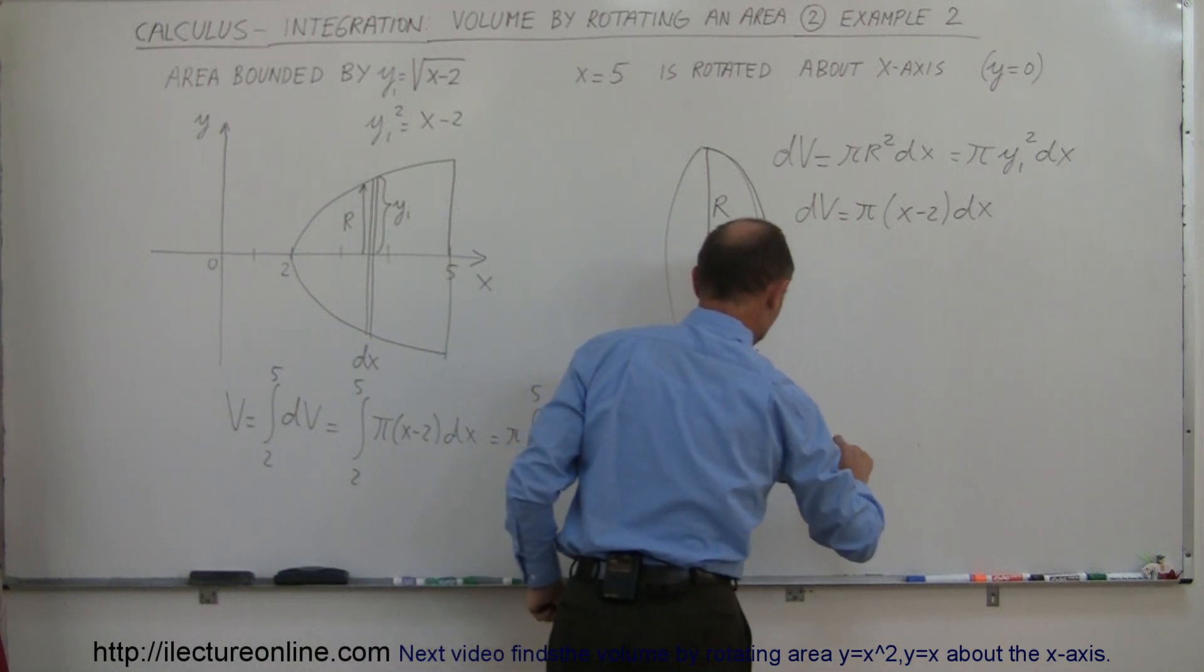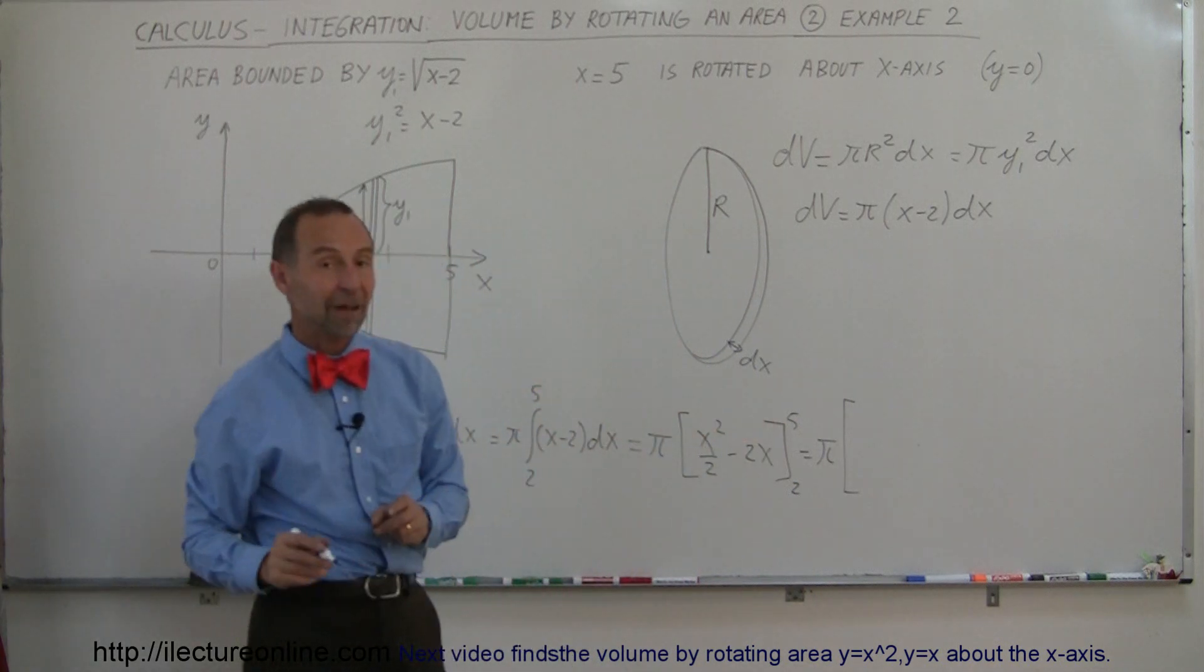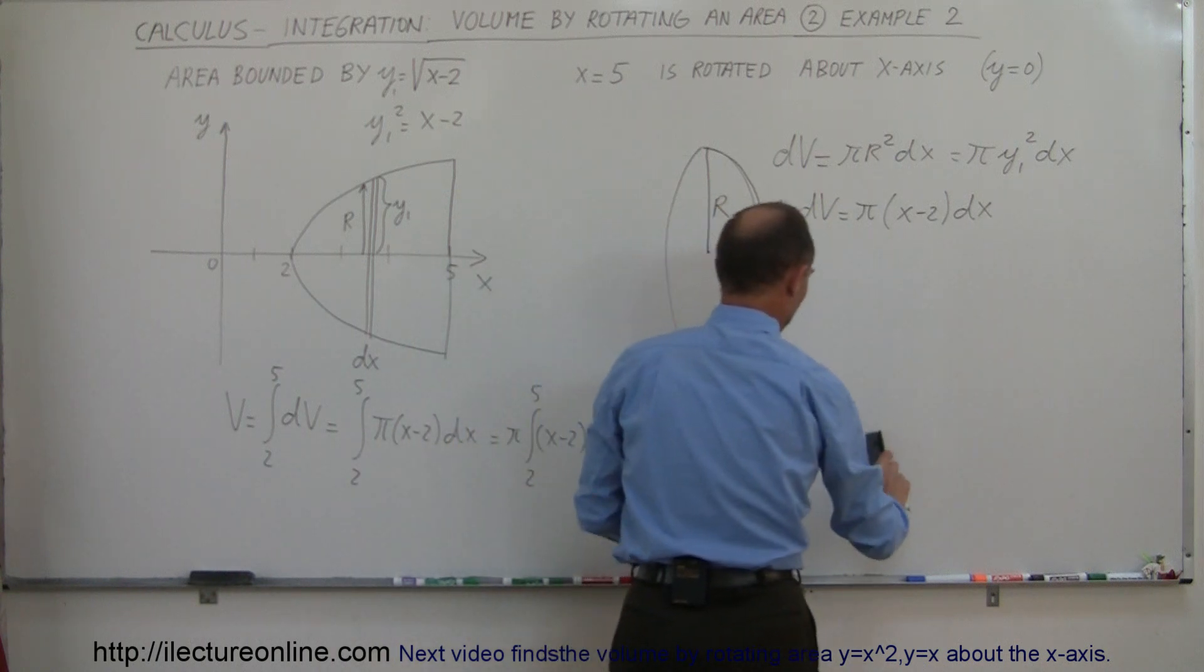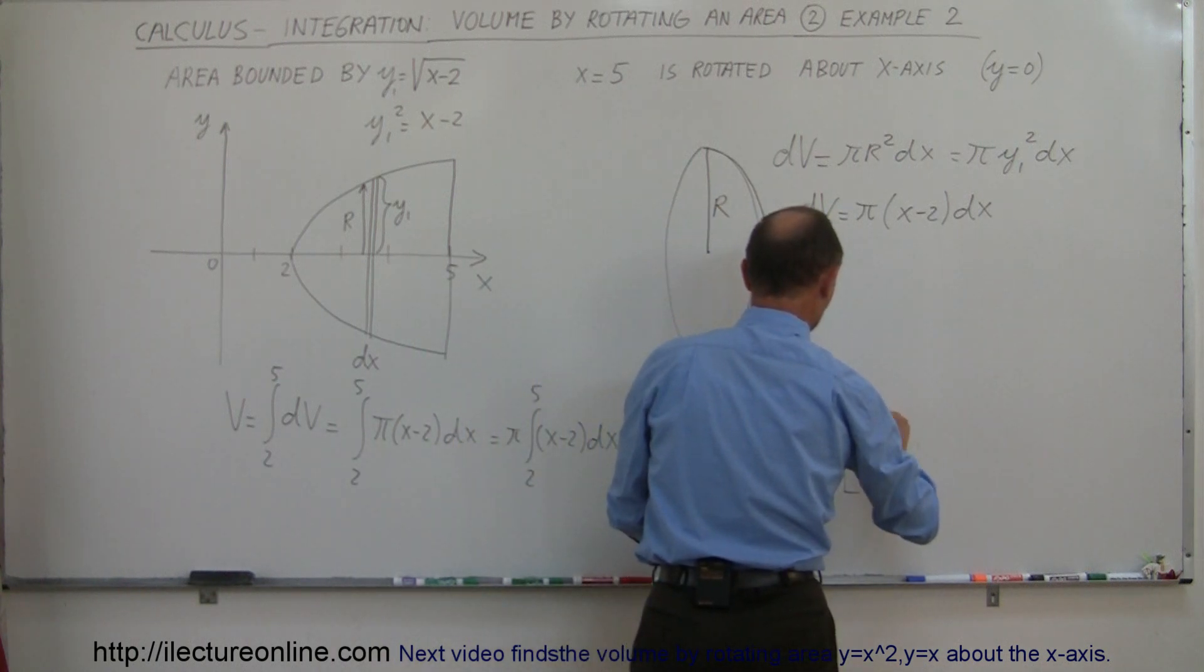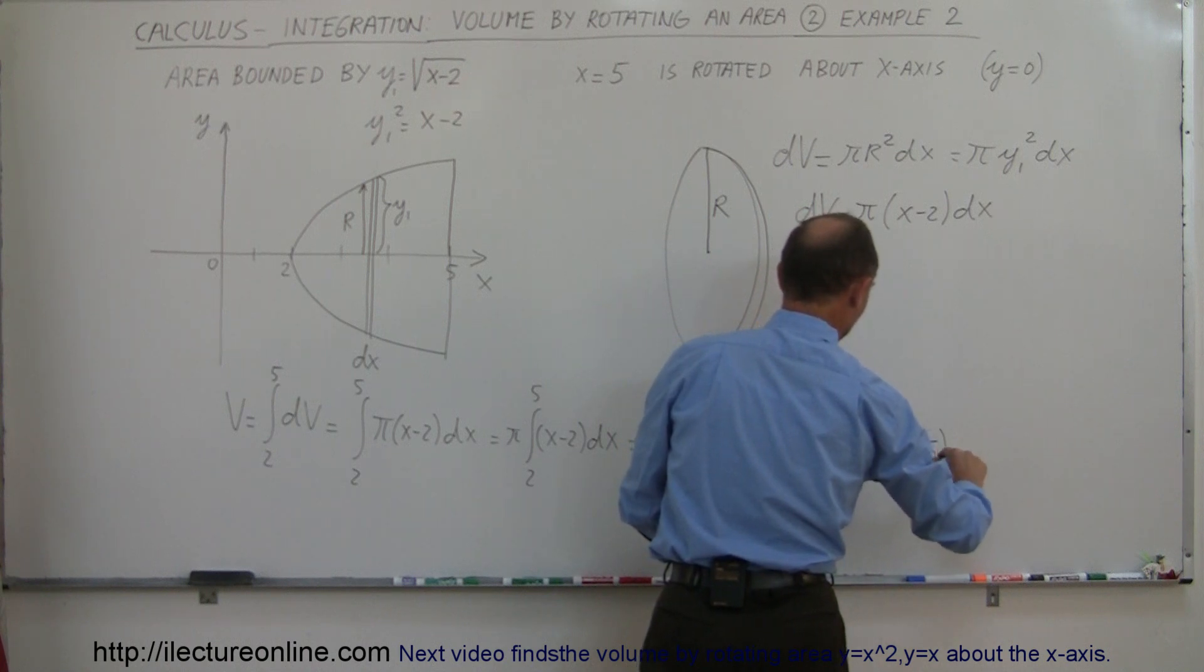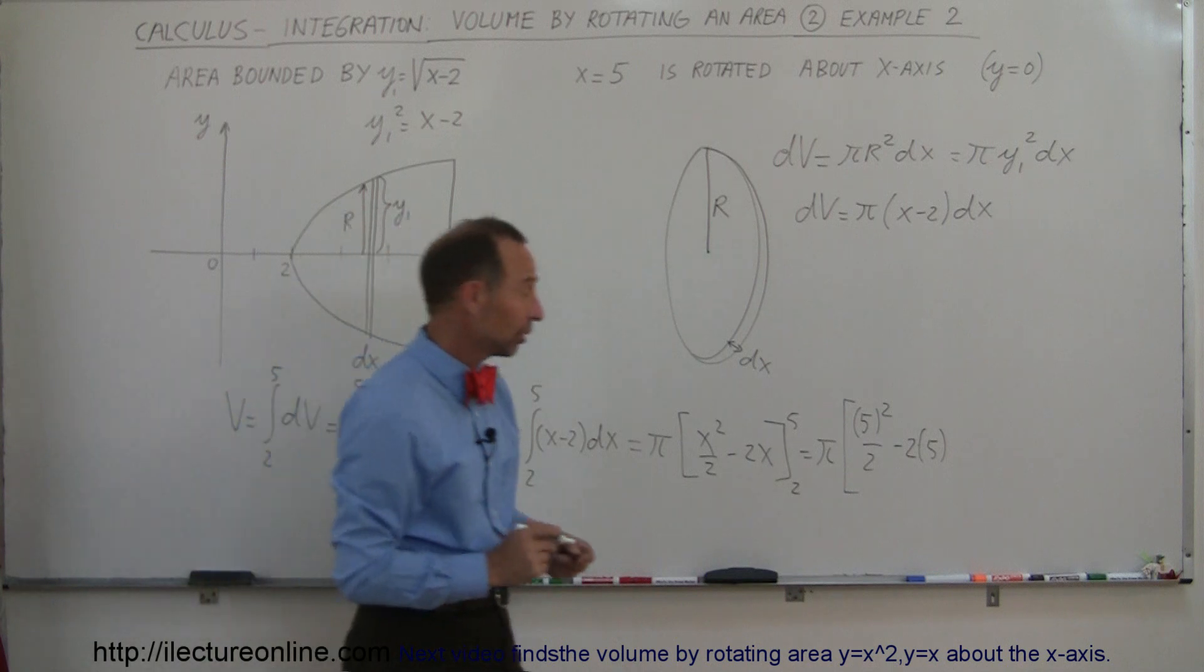The integral of x would be x squared over 2, and I can't forget my π. That's π times x squared over 2 minus 2x. That's the integral of (x minus 2), and the limits are from 2 to 5. When I plug in my upper limit, I get π times—plug in the upper limit—5 squared over 2, which is 25. I might as well just do the substitution first so you can see how that works. So 5 squared over 2 minus 2 times 5, that's when I plug in the upper limit.